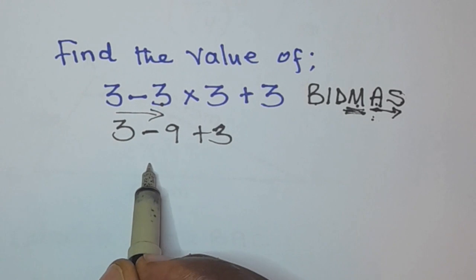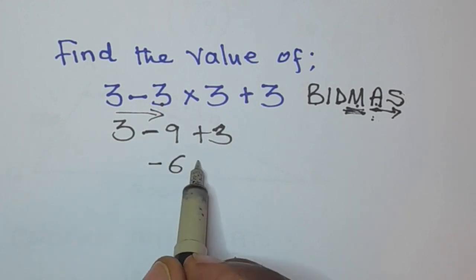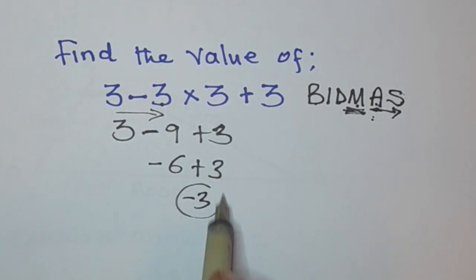So 3 minus 9 is negative 6 then plus 3. Negative 6 plus 3 is negative 3. So this is the answer.